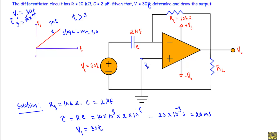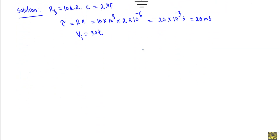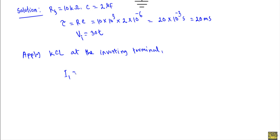The non-inverting terminal is directly grounded, therefore Vp equals zero volts. Due to negative feedback — because the output is connected to the inverting terminal through a feedback resistor — Vn will also equal zero. The current into the inverting terminal is zero. Let's say the input supplies current i1, which leaves through path i2. Applying Kirchhoff's Current Law at the inverting terminal gives i1 equal to i2.